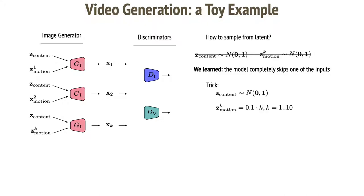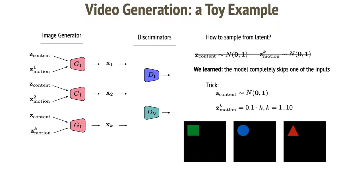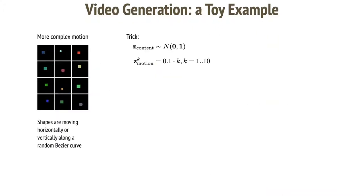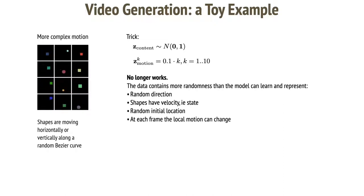What if we can cheat a little? We sample content from a normal distribution while we use a step function to sample from motion. For kth frame, the motion code will look like k times 0.1. In this case, it actually works since the motion can be completely described by such model. So the generator needs to know how to count. Let's use a slightly more complicated data. Shapes are now moving along Bezier curves. The trick no longer works since the direction is random, the acceleration is non-zero and shapes have state. The initial location is also random. So let's just learn this using a recurrent neural network.